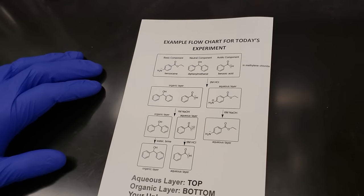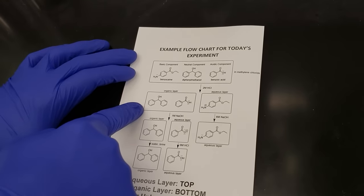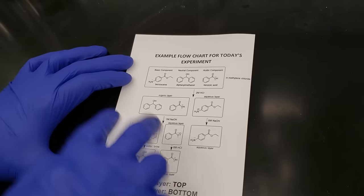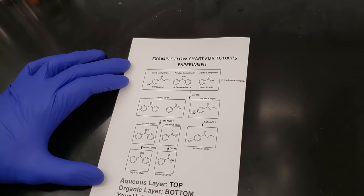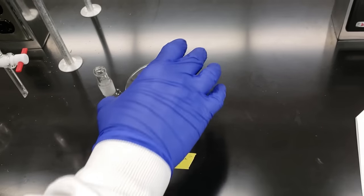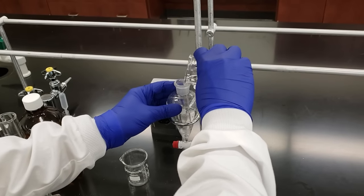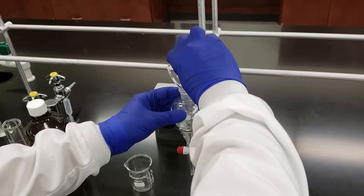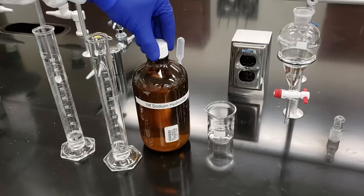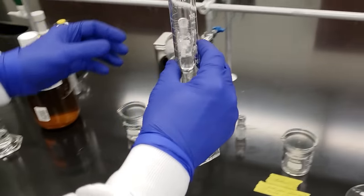We've isolated our benzocaine successfully and noted the weight on our data sheet. Now we're moving on to the next phase: taking our methylene chloride organic layer, which contains our neutral component and our benzoic acid derivative, and pouring it back into our sep funnel. We'll use 1 molar sodium hydroxide to isolate the two remaining compounds from each other. Make sure our stopcock is closed, then pour the methylene chloride back in. We've measured out 10 mL of 1 molar sodium hydroxide for our first extraction.